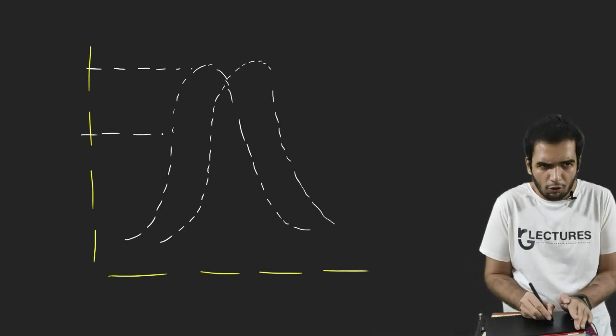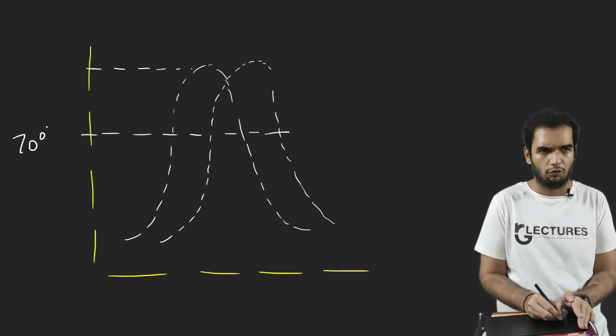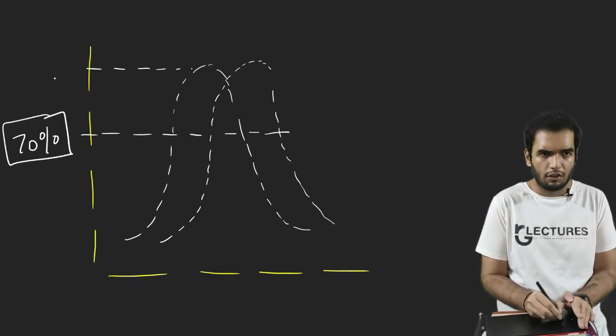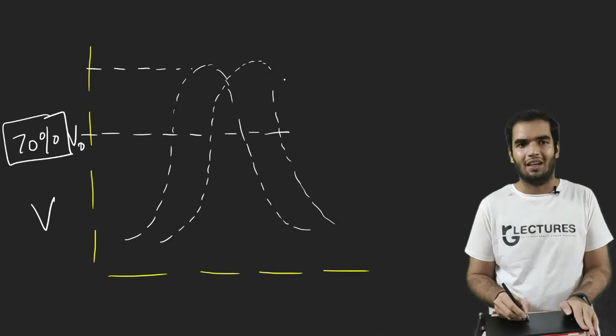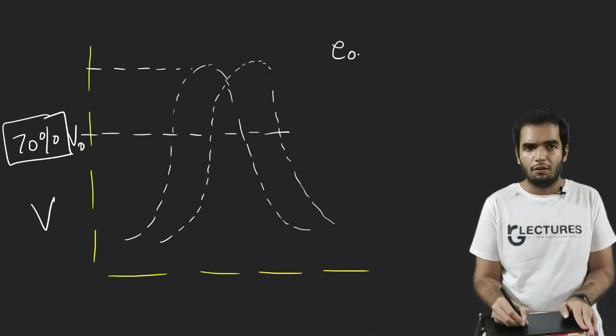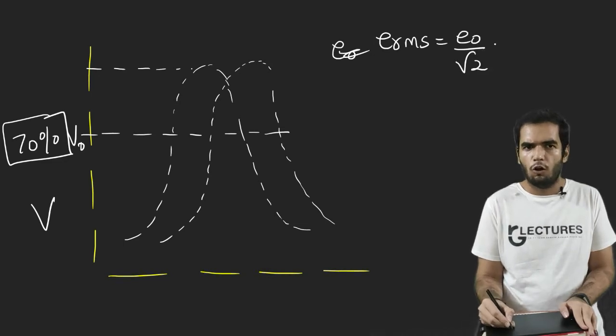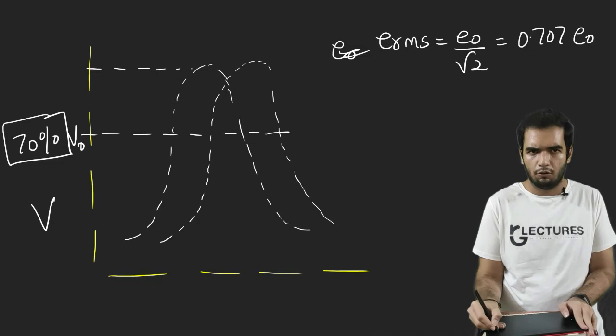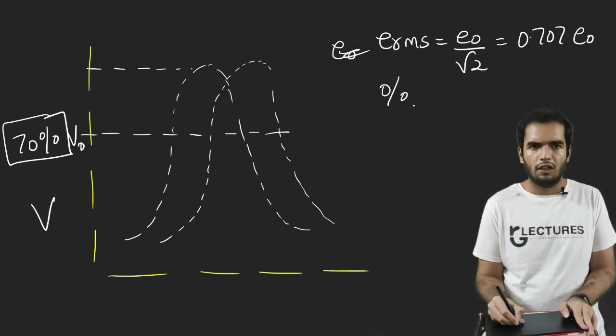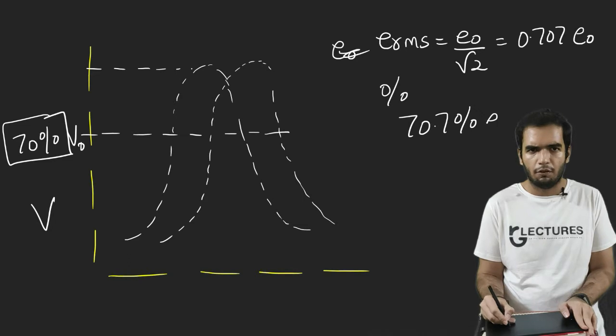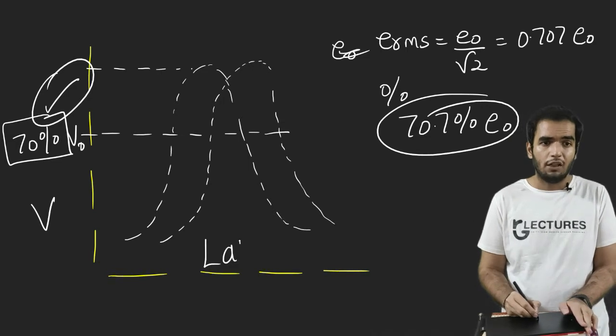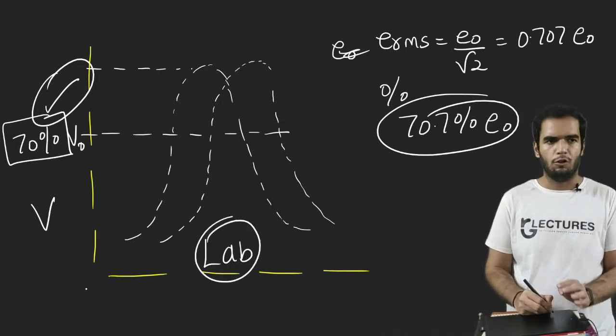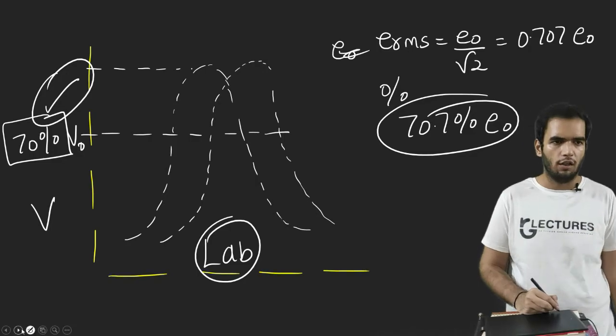But the 70th percentage of the peak is always considered as a constant. The 70th percentage of the peak. Suppose this is the graph of V. So 70th percentage of V0 is always constant. And that is what is RMS value. Now, what is I_RMS or E_RMS equals E0 upon root 2. If you solve 1 upon root 2, you will get 0.70 times of E0. And if you convert it into percentage, you will get 70.7th percentage of the peak value. So this is also one of the application which we do in laboratory. We always focus on the RMS value and not on the peak value.